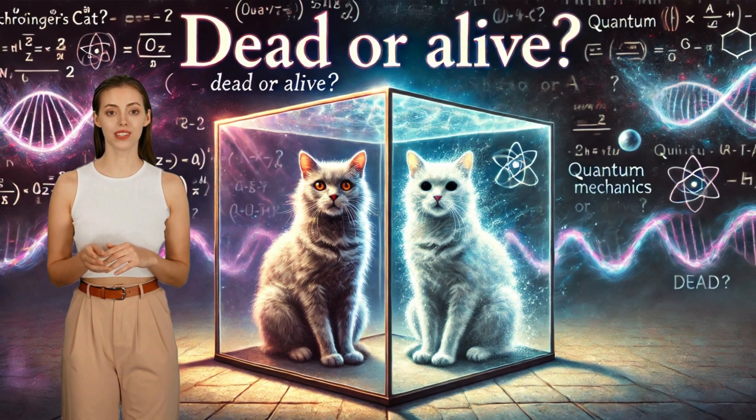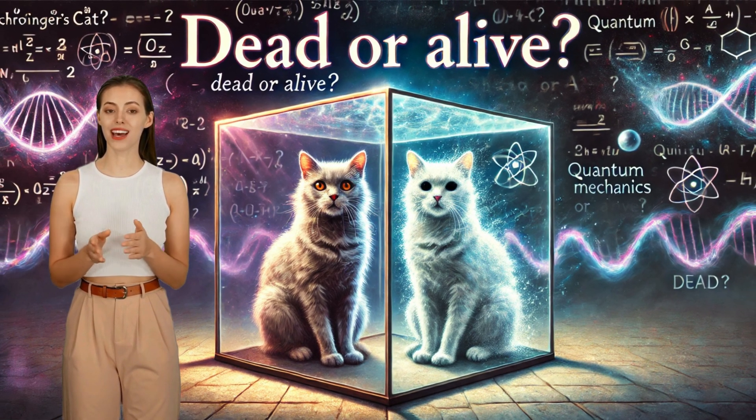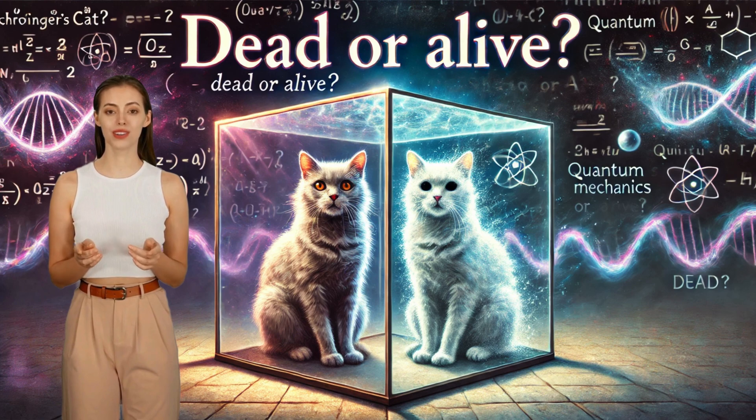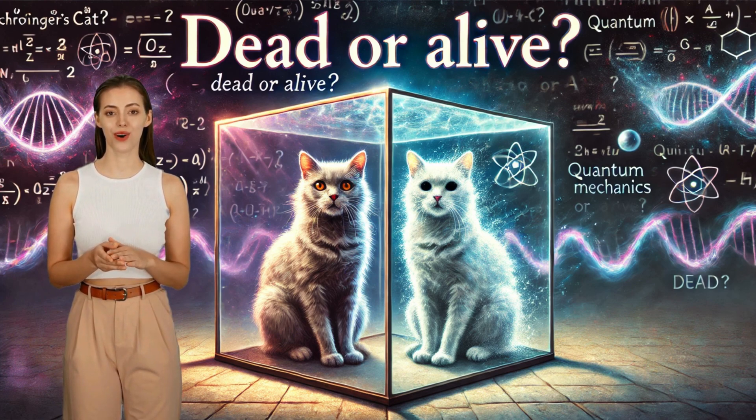To explain this through the Schrödinger's cat experiment, superposition implies that a cat inside a closed box is both alive and dead at the same time until we open the box and observe it.